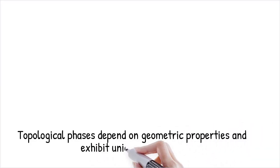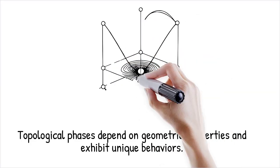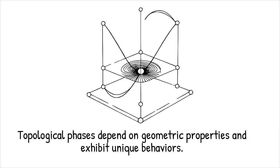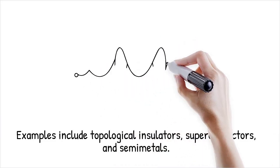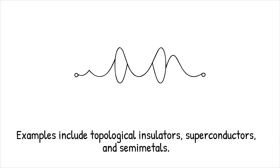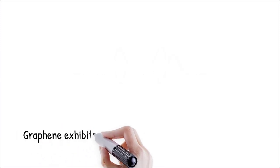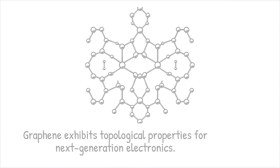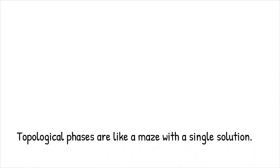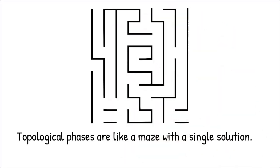Topological phases protected by geometry. Topological phases of matter are exotic states that depend on the material's geometric or topological properties rather than its local atomic arrangement. These phases exhibit unique behaviors, such as conducting electricity on their surface while being insulating inside. They are robust to defects or disturbances, making them promising for quantum computing. Topological insulators, superconductors, and semi-metals are examples of materials that exhibit these phases. Their properties arise from quantum mechanical wave functions that are protected by mathematical topology. Graphene, a single layer of carbon atoms, exhibits topological properties that make it a candidate for next-generation electronics. Topological phases are like a maze with only one solution. Its structure protects its unique properties no matter how the environment changes.